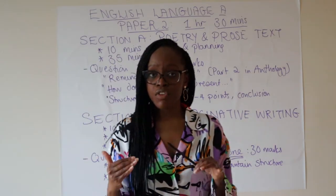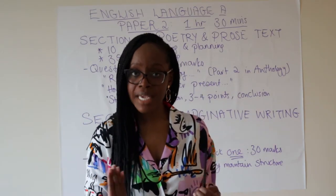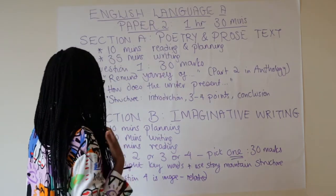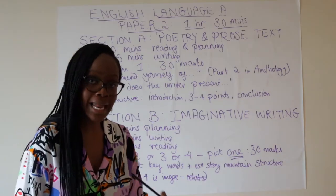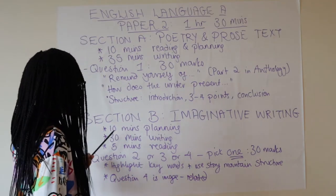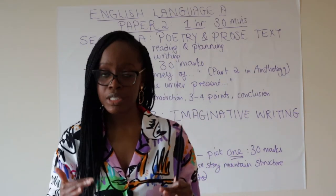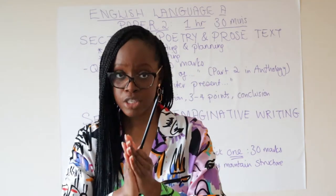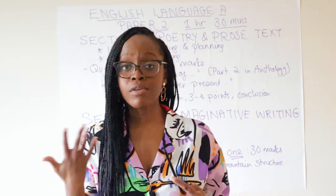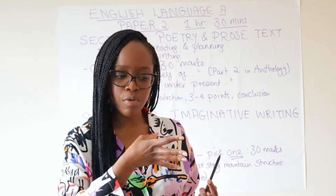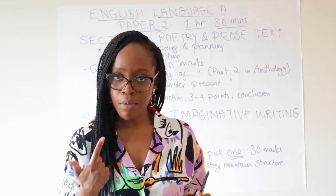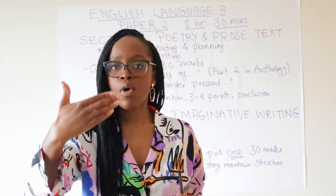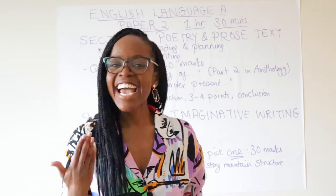The remaining 45 minutes should be allocated to Section B — the imaginative writing section. Of those 45 minutes, spend 10 minutes planning out your answer in detail. This planning time is sacred. Make sure both your plans for Section A and Section B are in your transcript, so that if anything goes wrong and you can't complete your answer, the examiner can at least see your plan and where you were going with it.